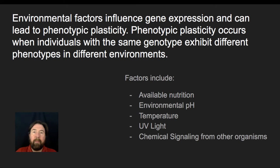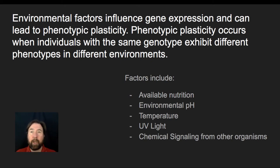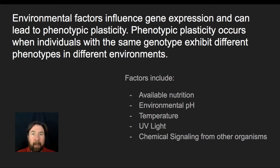The five major environmental factors we consider are: availability of nutrition — if one individual has adequate nutrition and another does not, the undernourished individual may not reach their genetic potential for size; environmental pH, which can produce distinct phenotype differences; temperature; UV light, which affects melanin darkening in skin — you can even have tan lines where one part of your body has a different color than another; and chemical signals from other organisms.